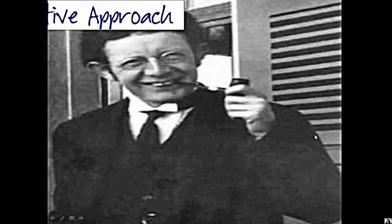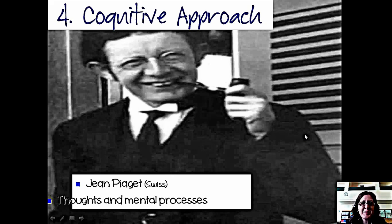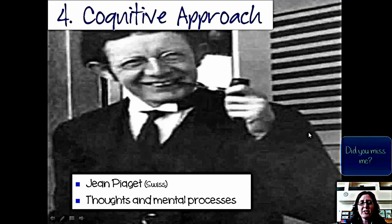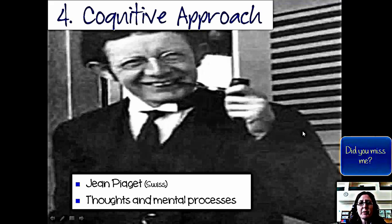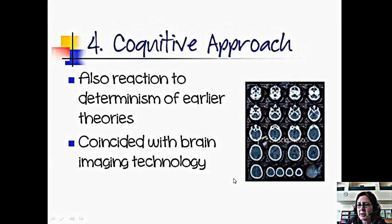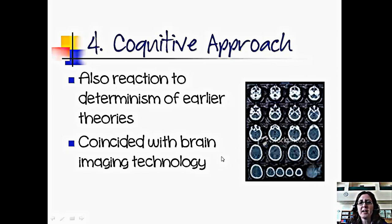The fourth approach is the cognitive approach. The Swiss psychologist Jean Piaget and other cognitive theorists believed that our thoughts and our mental processes determine the things that we do. We are cognitive, we're rational — the word cognitive actually means thinking. The cognitive approach is also a reaction to the determinism of the psychodynamic and behaviorist approaches. With more brain imaging technology — MRIs, CAT scans — we were able to see what cognitive processes were taking place while decisions were being made, and we realized we really do have some control over these things.